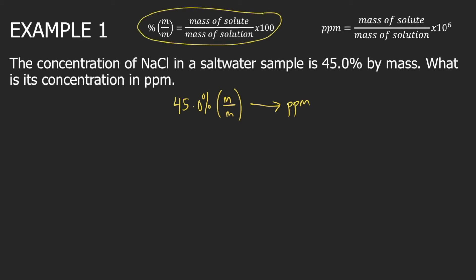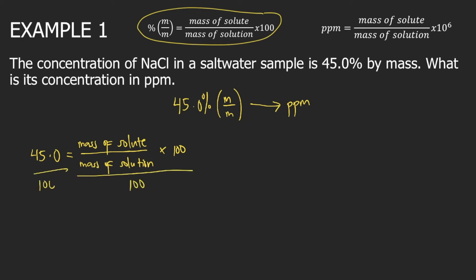First, we will use the formula for mass percent. It says that mass percent — so 45 — is equal to mass of solute divided by mass of solution, times 100. If you divide both sides by 100, the 100 cancels on the right side, leaving mass of solute divided by mass of solution. On the left side, 45 divided by 100 equals 0.45.